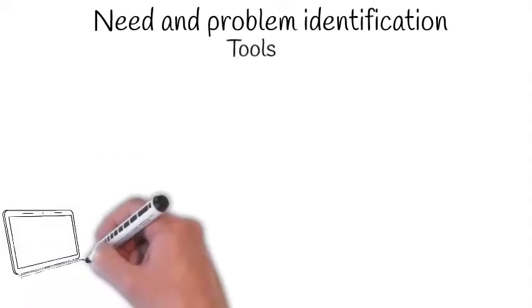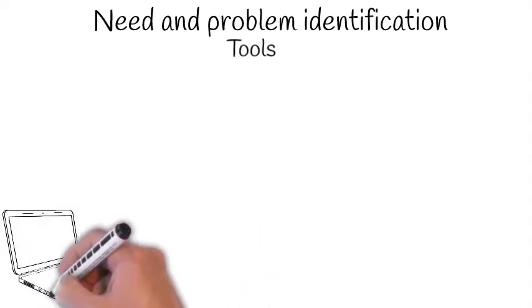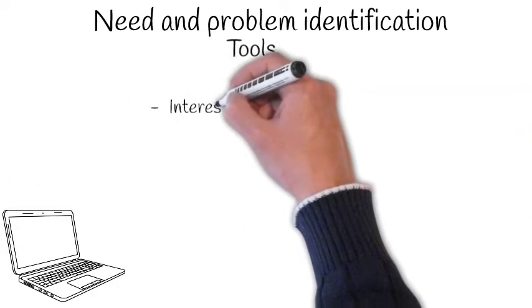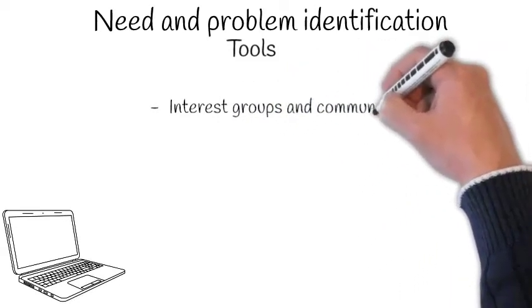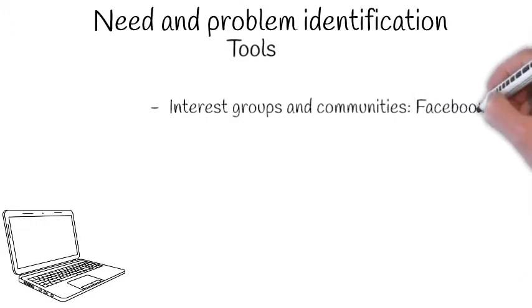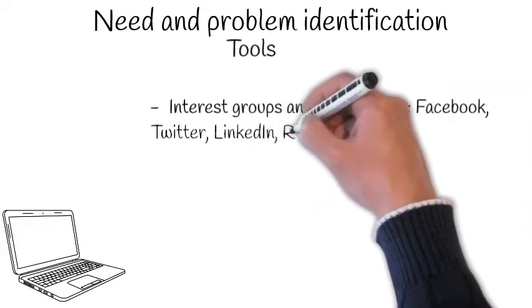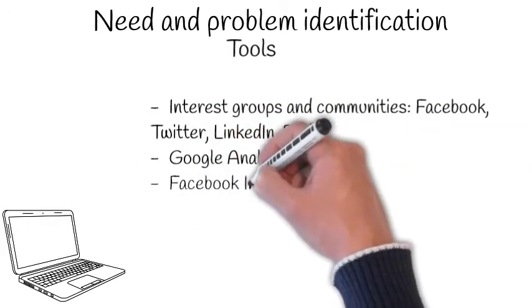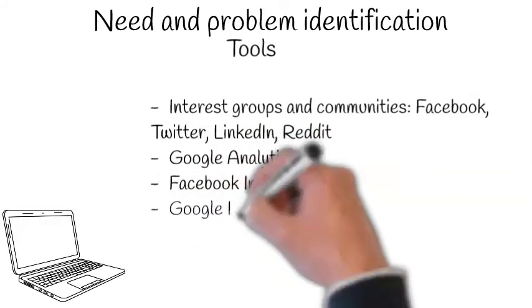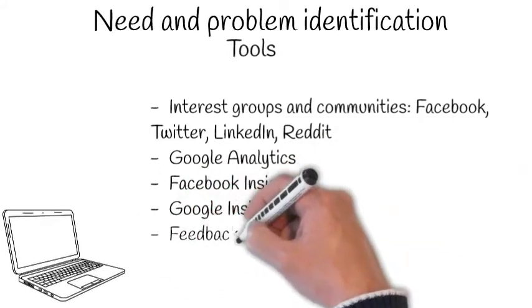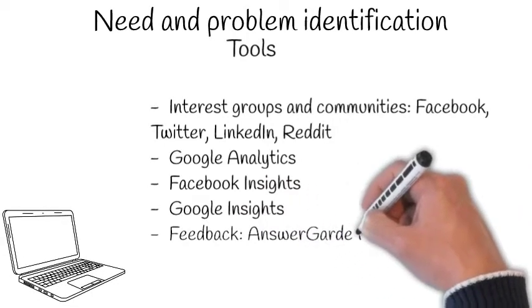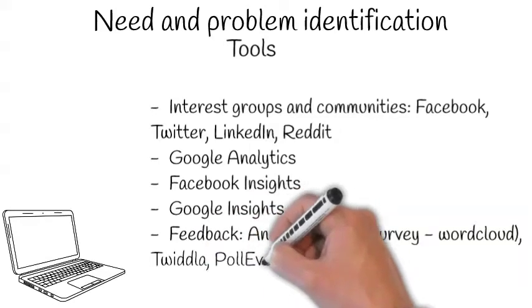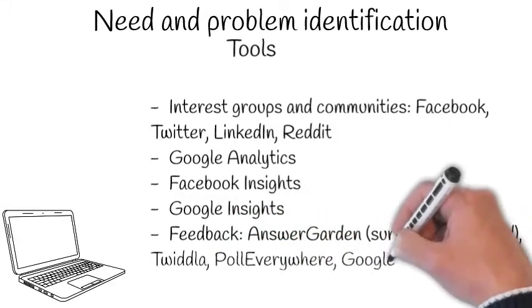Some of the digital tools that you can use in this phase include browsing and analyzing social media sentiment and social media discussions on different interest groups and communities. Also the use of Google Analytics online can provide you more information regarding the behavior patterns of your consumers. So you have Google Analytics, Facebook Insights as well as Google Insights where you can see what are the most popular searches so that you can get an idea on what are your consumers' interests. And then some tools that you can use for feedback to find out what consumers think about your products, what are their needs, what else they might need are some of the survey and questionnaire tools, all of them interactive such as AnswerGarden or Poll Everywhere.